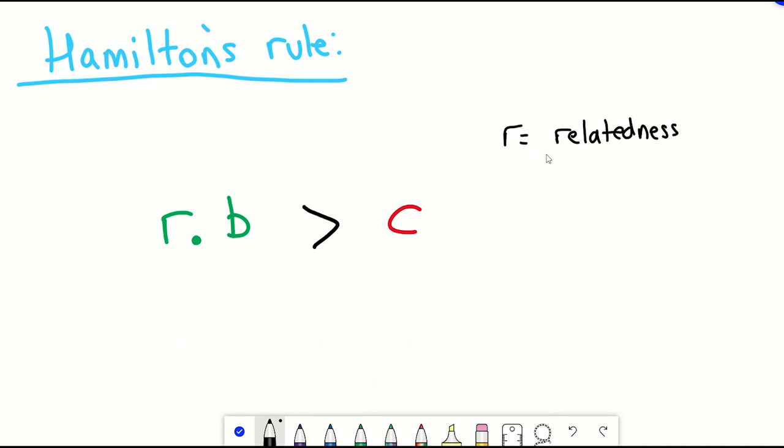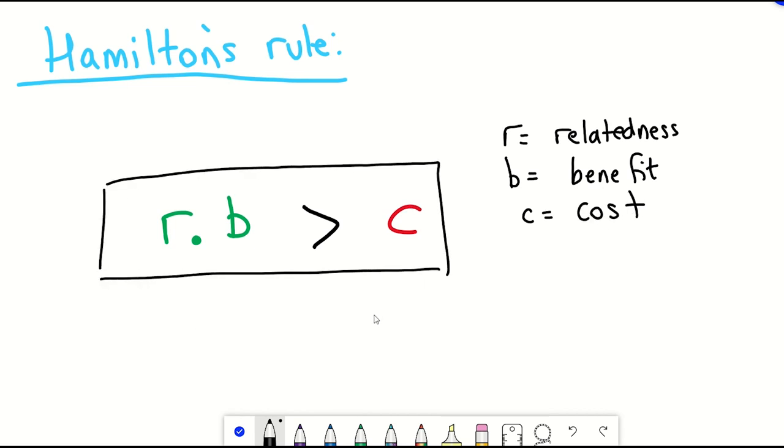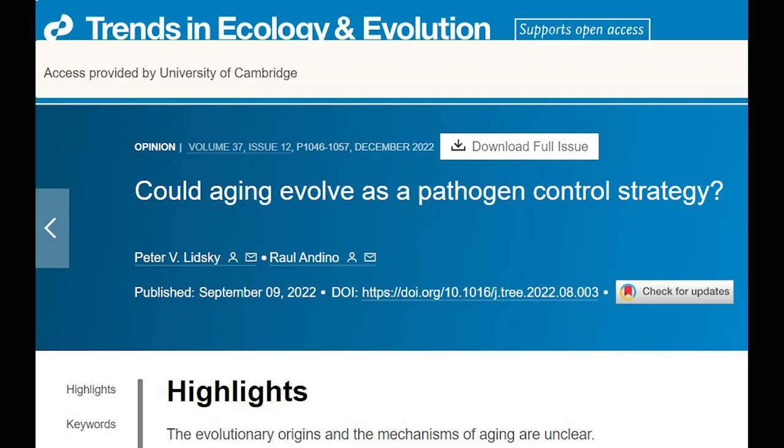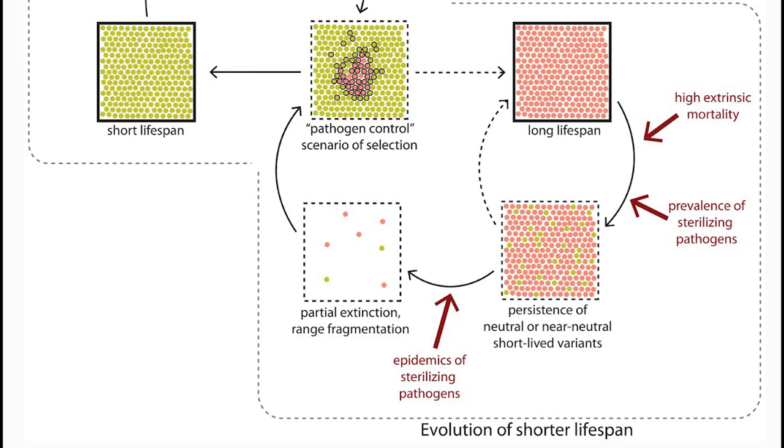And so this is the formula. If the cost to the individual is less than the benefit to the recipient multiplied by the relatedness, then it in theory should be selected or favored by natural selection. So usually though, aging is considered a cost with no benefit to the kin. But according to this pathogen control hypothesis, aging might have evolved as a way to prevent the spread of infectious diseases among kin groups.